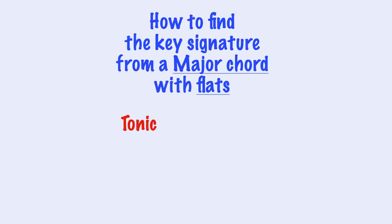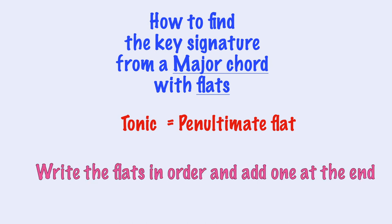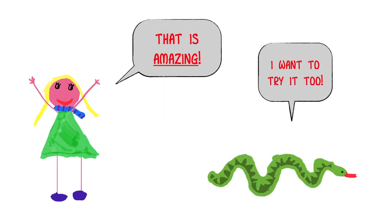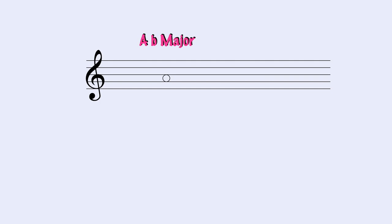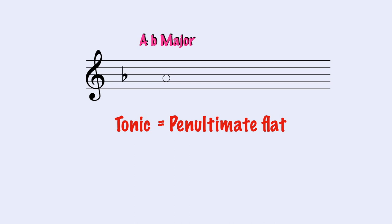The name of the chord is our tonic, and that is also our penultimate flat in the key signature. So to find the key signature, we write the flats in order until we reach our note, and then we add another flat at the end. For example, in A flat major, A flat is our tonic, but it is also the penultimate flat in our key signature — the flat before the last. So we write the key signature up to La: Si, Mi, La, and we add another flat afterwards — Re. So A flat major has four flats.